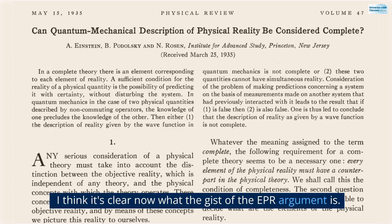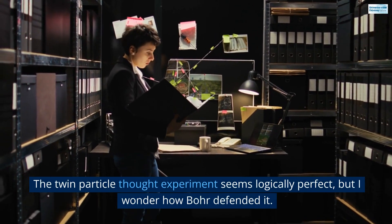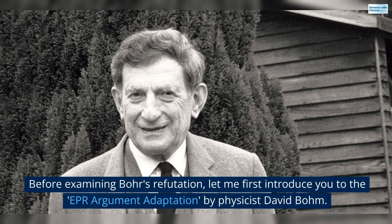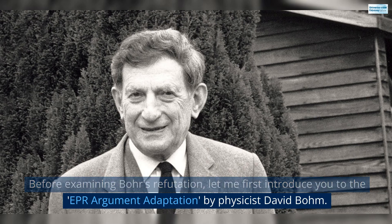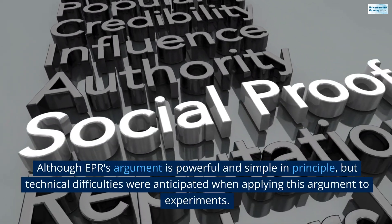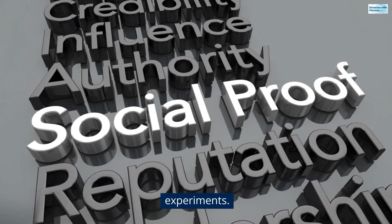I think it's clear now what the gist of the EPR argument is. The twin particle thought experiment seems logically perfect, but I wonder how Bohr defended it. Before examining Bohr's refutation, let me first introduce you to the EPR argument adaptation by physicist David Bohm. Although EPR's argument is powerful and simple in principle, but technical difficulties were anticipated when applying this argument to experiments.